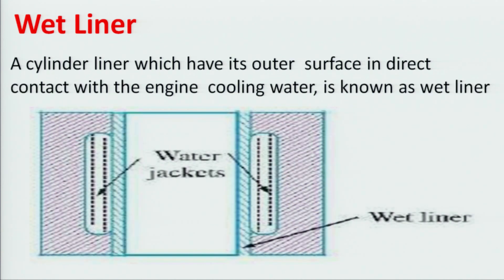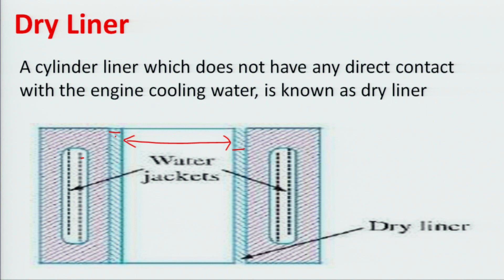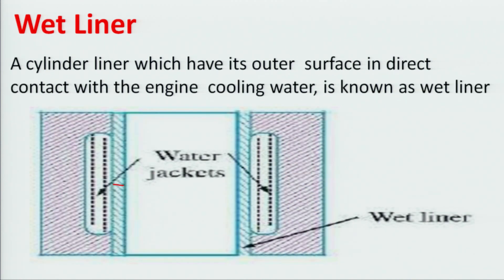In case of a wet liner, the liner is in contact with the water jacket provided for cooling — so of course the cooling will be much better. But there is a problem: if a leakage occurs, it is in touch with the liner, so that leakage can go inside the engine cylinder and contaminate the mixture. This is the problem with wet liner. To manufacture a wet liner is easy, but manufacturing a dry liner is a difficult job because the water jacket is built in between the walls.